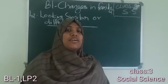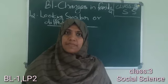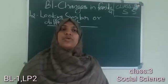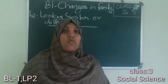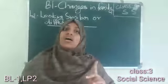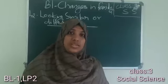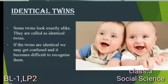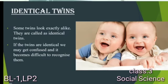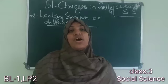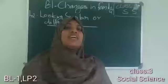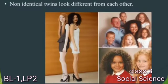Can two people in a family look exactly the same? Yes — when they are born together from the same parents, they are called identical twins. Now let's look at non-identical twins. Here, these are non-identical twins. They are not the same; they are not exactly similar.